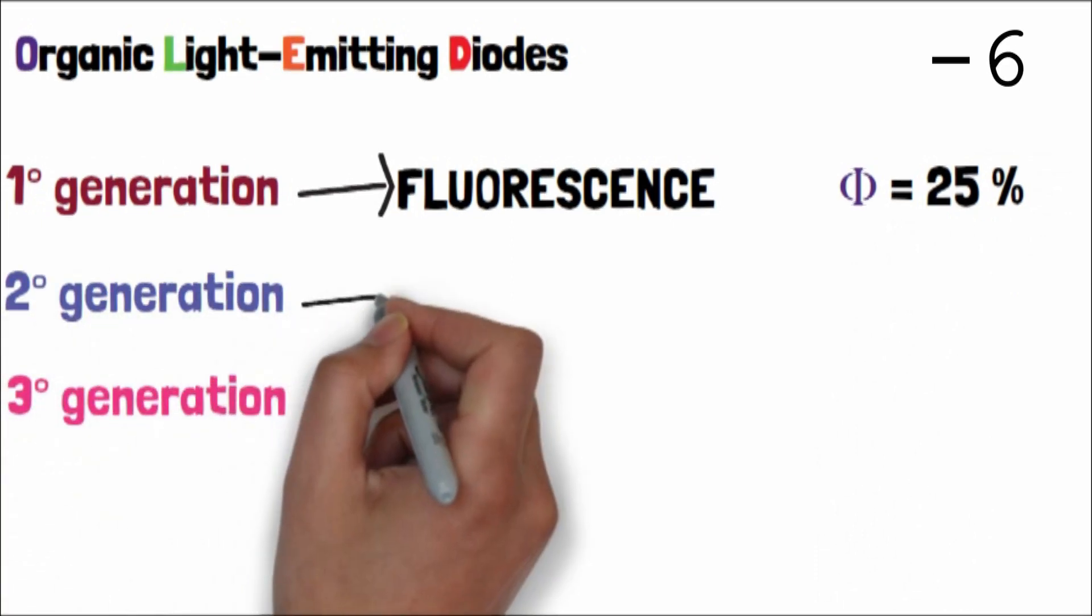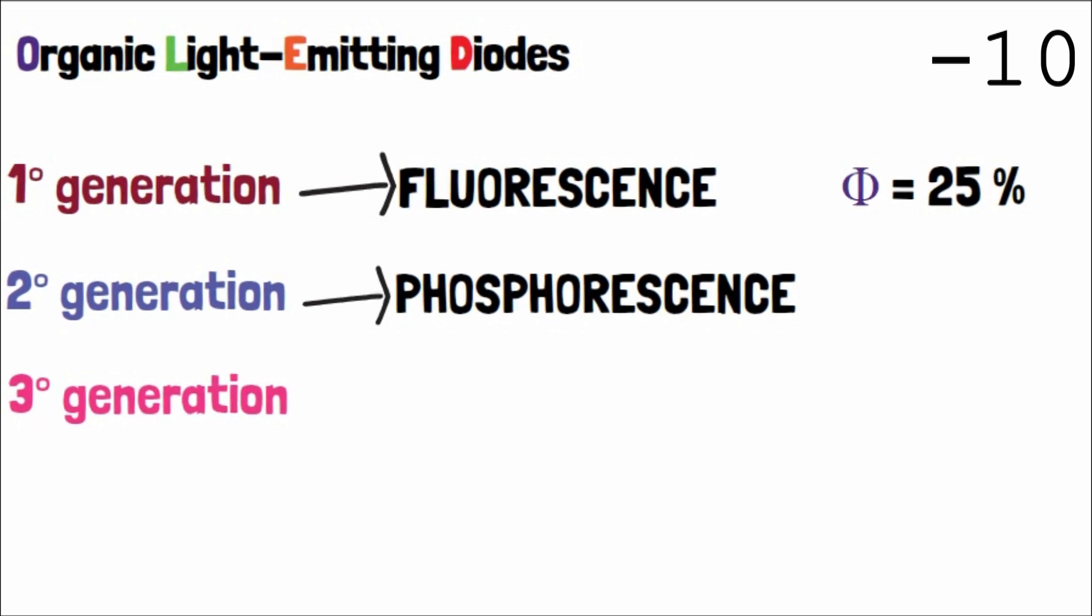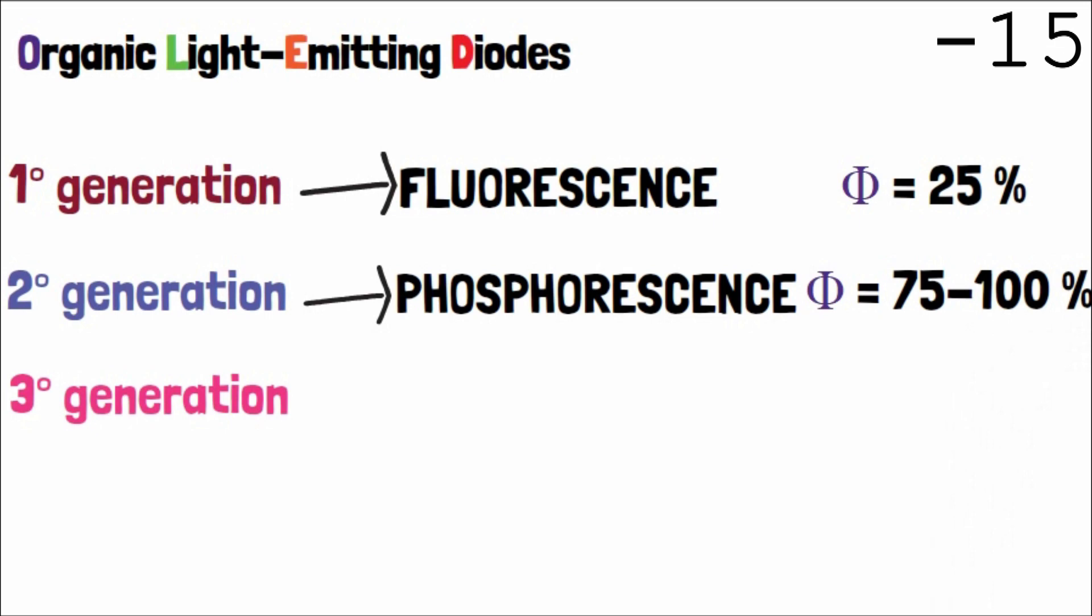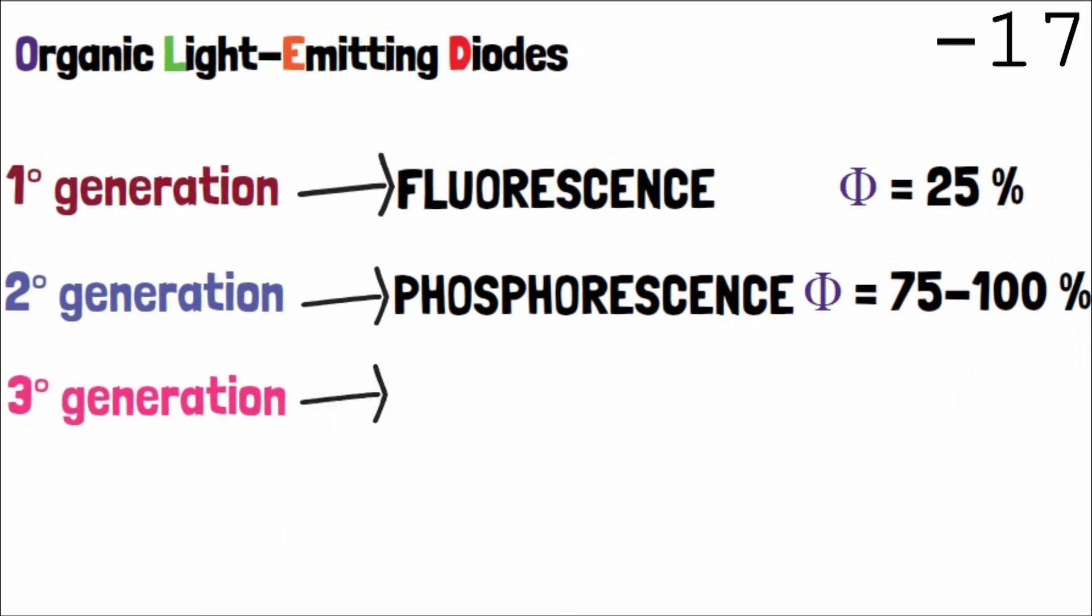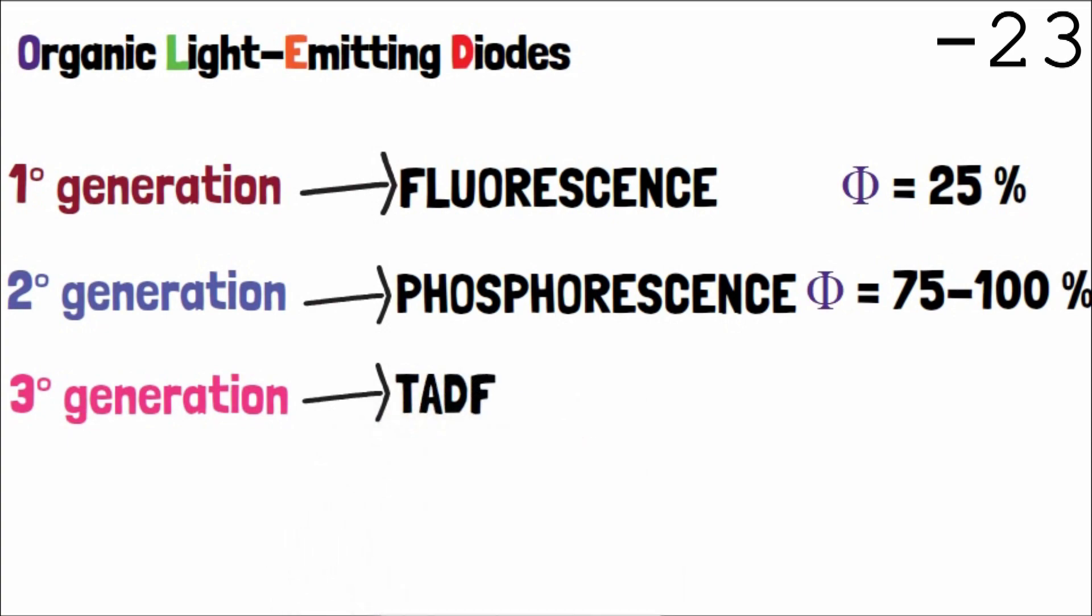After this stage, we have moved to the phosphorescent OLEDs, with quantum yield from 75% to 100%. Nowadays, it seems that phosphorescent OLEDs have been displaced by the most promising thermally activated delayed fluorescent OLEDs.